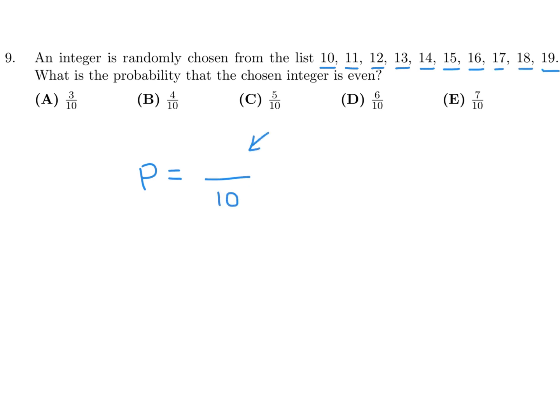Now, the numerator is the specific condition. And in our case, our specific condition is that a number has to be even. So let's count how many evens. We have 1, 2, 3, 4, 5. So 5 over 10 is the answer, and that corresponds to C.